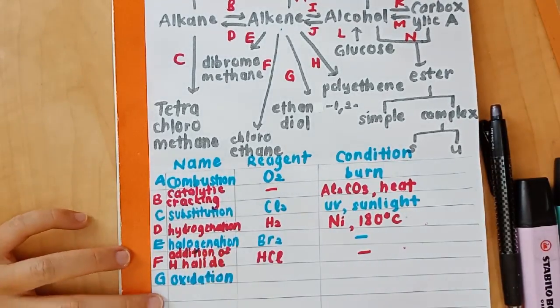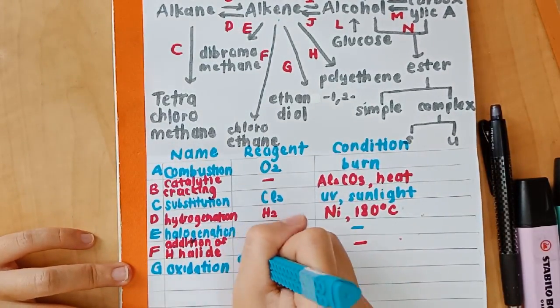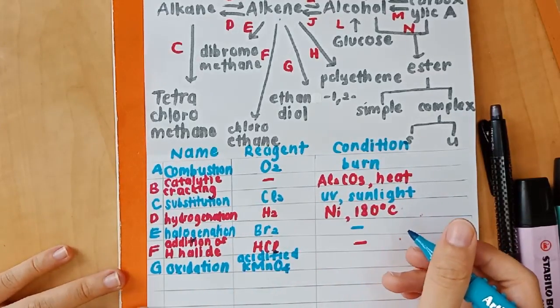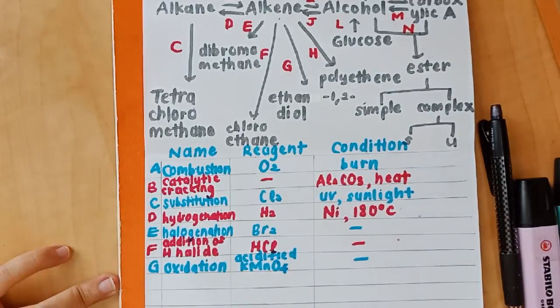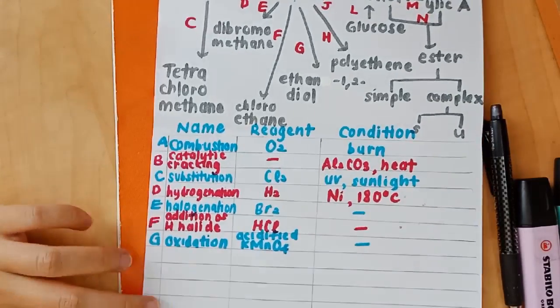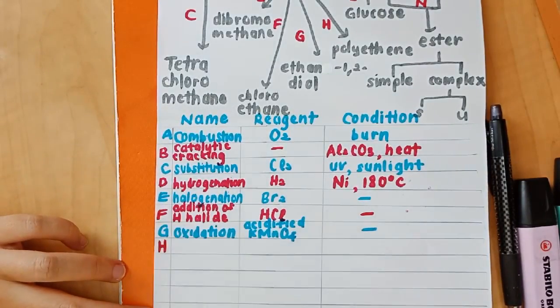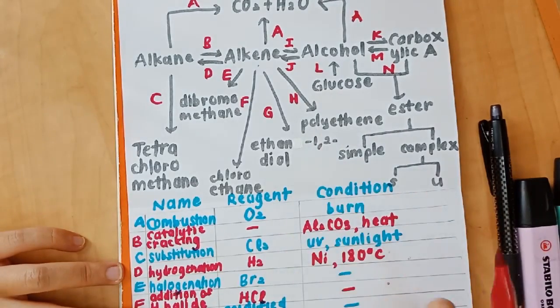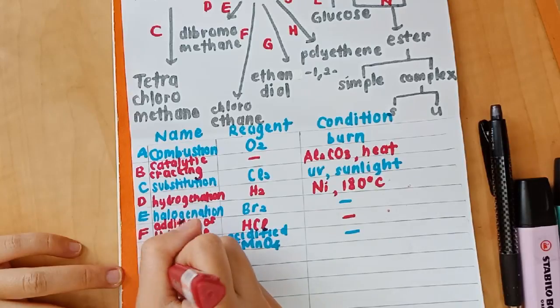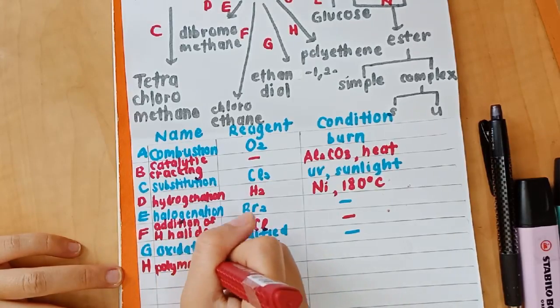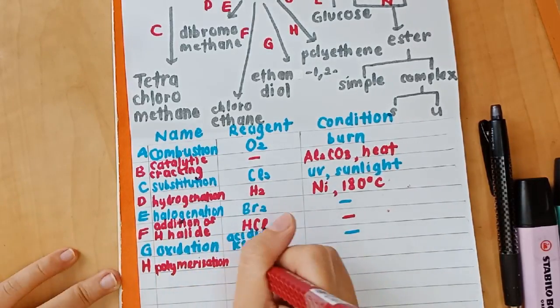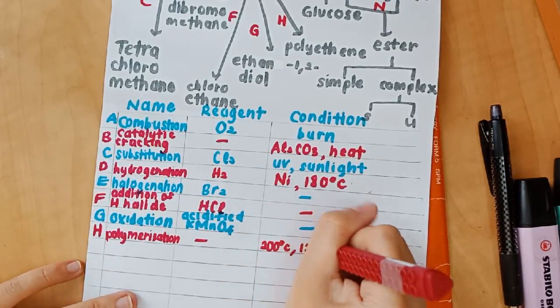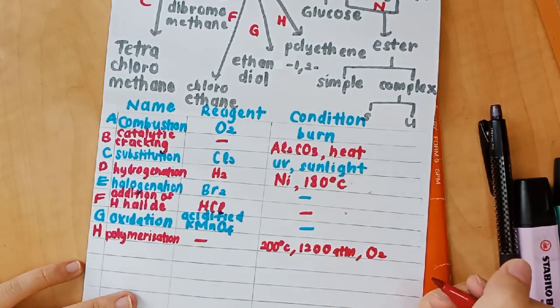G is from alkene to ethan-1,2-diol. And alkene has to undergo oxidation for this. The reagent needed is acidified KMnO4. And there is no condition. For H. From alkene to polyethene. Alkene needs to undergo polymerization. There is no reagent for this. But the conditions are rather important. They are 200 degrees Celsius, 1,200 atm, and also oxygen.